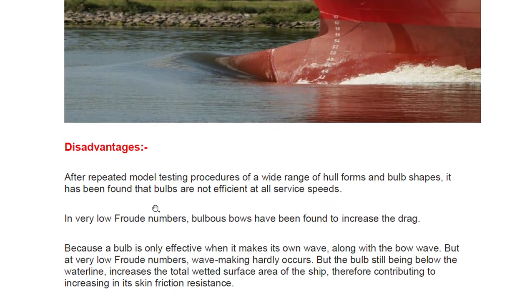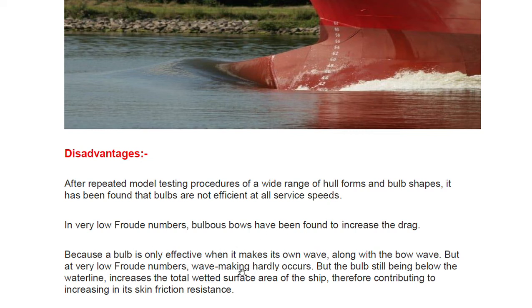After repeated model testing over a wide range of hull forms and bulb shapes, it has been found that bulbs are not efficient at all service speeds. That is the reason why Maersk line removed bulbous bows from their tanker ships. At very low Froude numbers, a bulbous bow has been found to increase drag. A bulb is only effective when it makes its own wave; at lower speeds it cannot generate sufficient wave, so crest and trough cancellation — the destructive interference — does not occur.